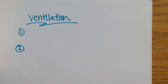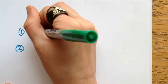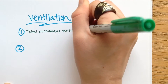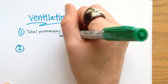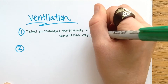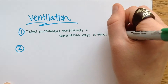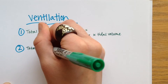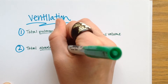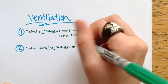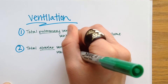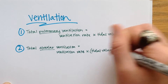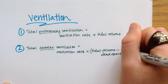When calculating a person's ventilation, there are two types of calculations. One, there is total pulmonary ventilation, which is the ventilation rate times the tidal volume. Two, there is the total alveolar ventilation, which is the ventilation rate multiplied by the tidal volume minus the dead space. Dead space refers to places where air remains in conducting pathways like the trachea and bronchi but are not exchanging gases with the blood. The total alveolar ventilation is a more accurate description of how much fresh air is actually reaching the alveoli.